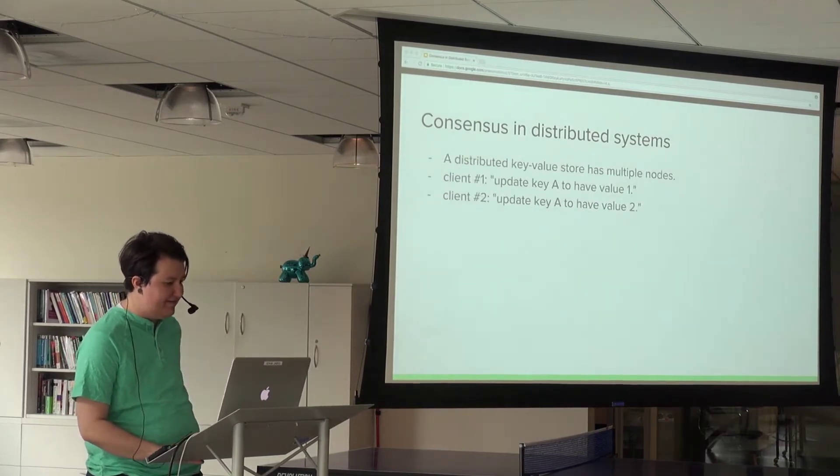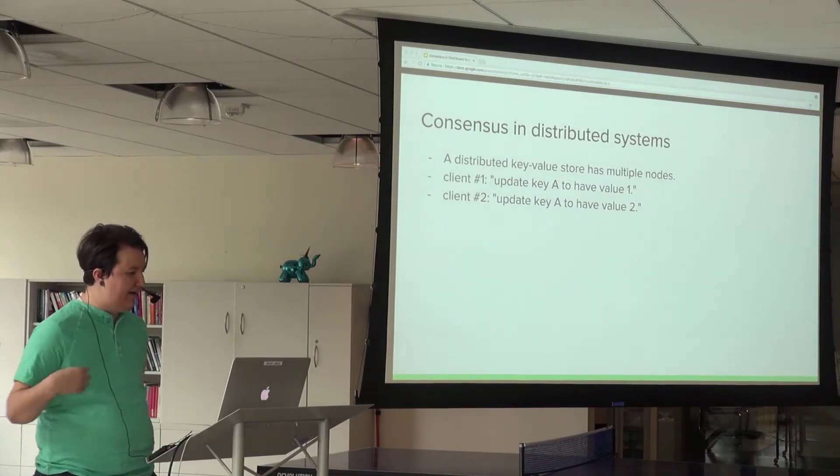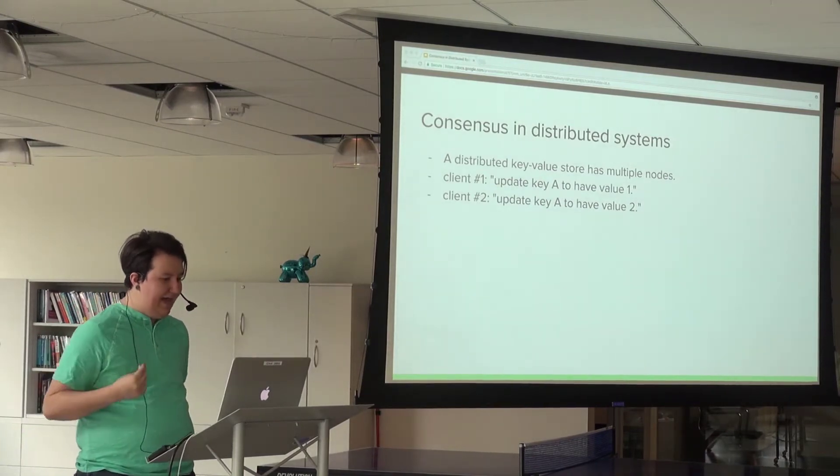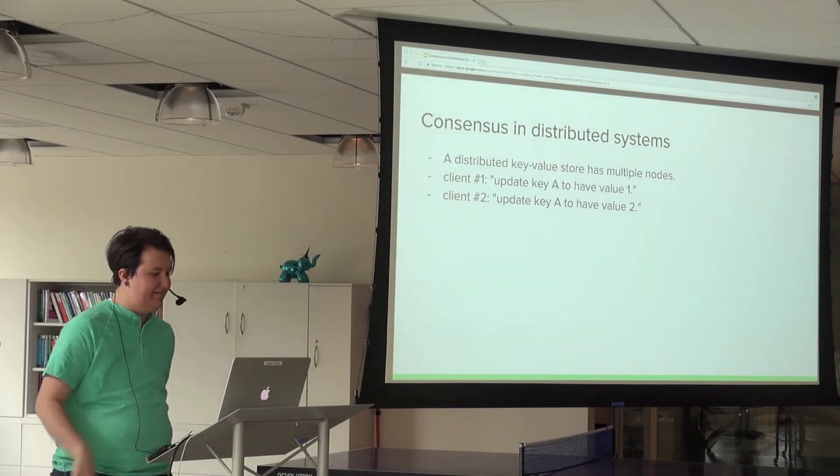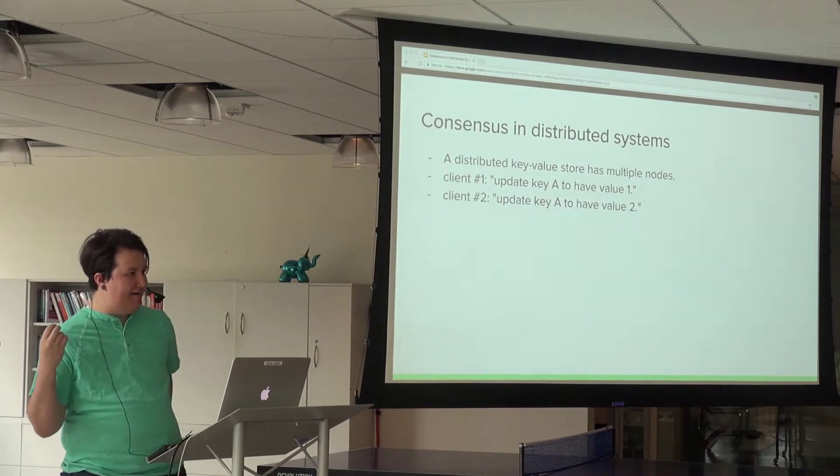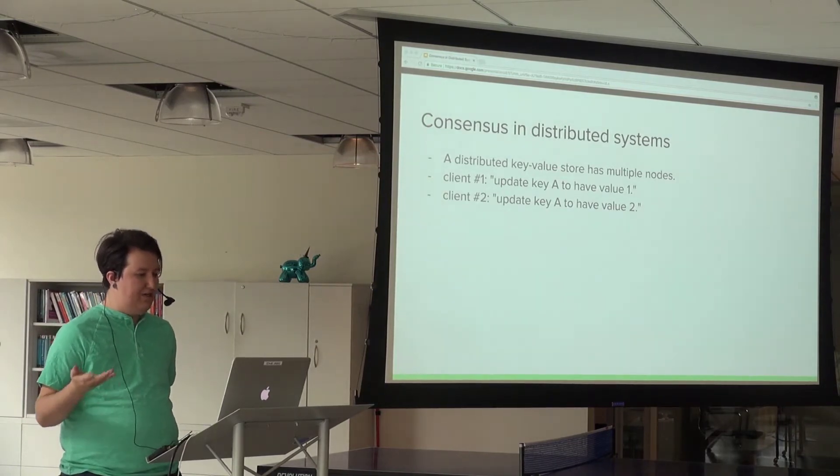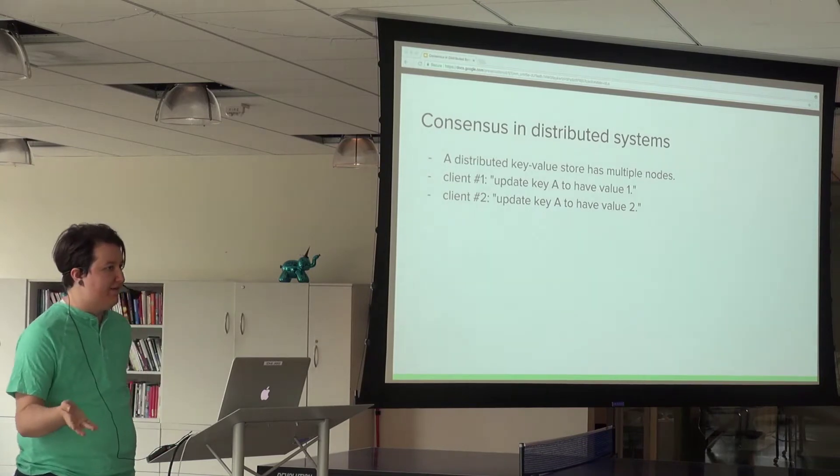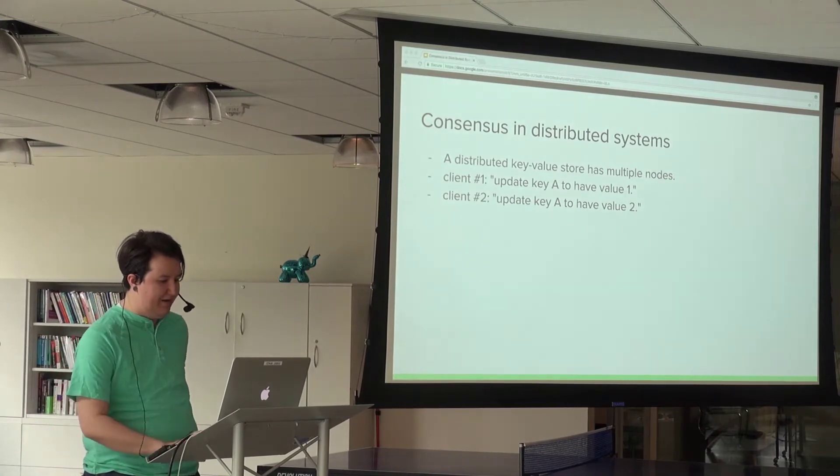An example of a consensus problem: you might have a distributed key-value store with multiple nodes. One client asks one node to update key A to value one, and simultaneously another client asks another node to update key A to value two. How does the system decide which transaction to commit, what order to process them, or whether to reject one and accept the other?